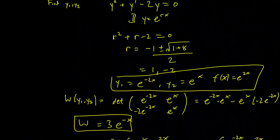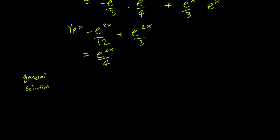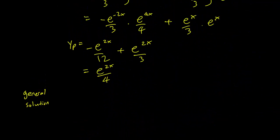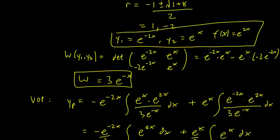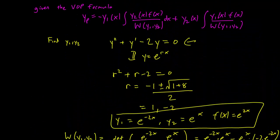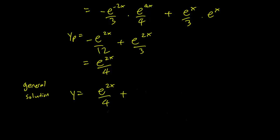So the general solution for the homogeneous equation is going to be c1·y1 + c2·y2. So the general solution is just going to be the particular solution plus the solution for the homogeneous equation, this one. And that's just going to be c1·y1 + c2·y2. And plugging in for y1 and y2, we just get c1·e^(-2x) + c2·e^x. And this is our general solution.